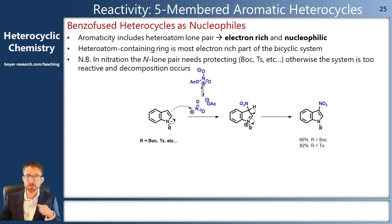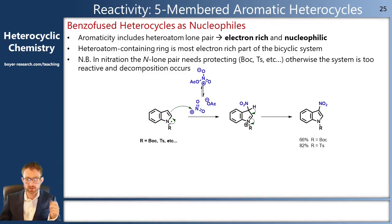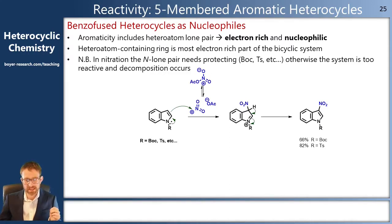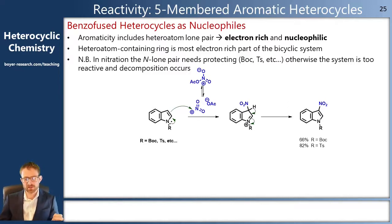In benzo-fused systems, preferential attack occurs at the 3-position. If you push the arrows from the lone pair of electrons on nitrogen through our system, you can get a new bond between carbon and — in this case — a nitro group from a nitronium cation, and then reformation of the aromatic system by loss of a hydrogen.